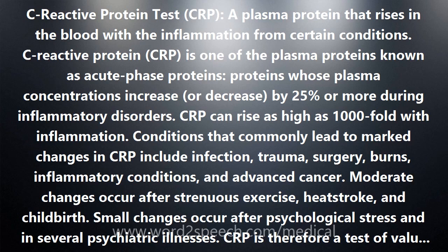C-Reactive Protein, CRP, is one of the plasma proteins known as acute phase proteins — proteins whose plasma concentrations increase or decrease by 25% or more during inflammatory disorders. CRP can rise as high as 1,000-fold with inflammation.